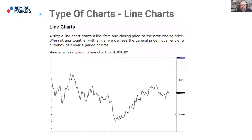There are different types of charts available. A simple line chart draws a line from one closing price to the next closing price — showing the general price movement of an instrument over time. For example, that's just a line chart of the euro against the US dollar. It doesn't tell us a massive amount, and very few traders will actually trade using line charts, as we want more data to have a deeper understanding of the market.